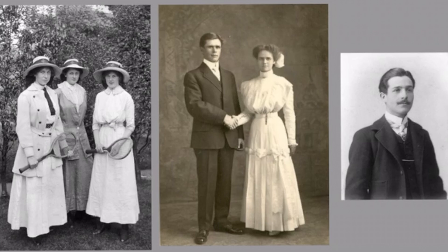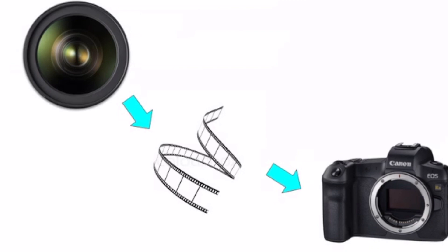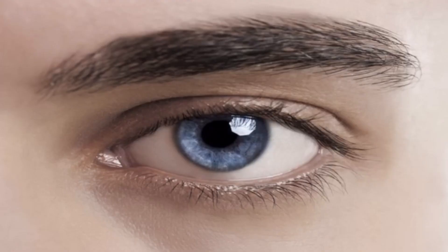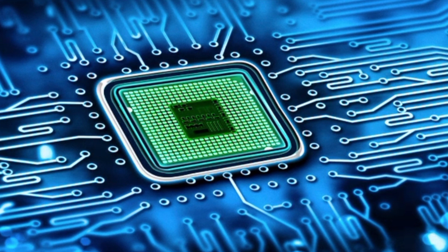Now let's move on to how the camera is made. There are three things that all cameras need: the lens, the film, and the camera body itself. Without these things, the camera would not be a camera. The process of a camera is similar to the human eye — the digital camera captures an object through its lens, an image sensor like the retina of the eye reads the light as an image, and finally the image processor converts the image into a photograph.